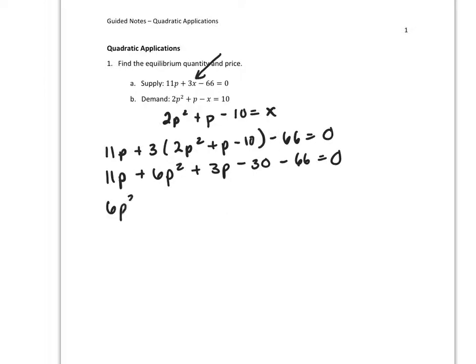6P squared. Let me see, 11P plus 3P is 14P. And negative 30 minus 66 would be negative 96. So now what I have is an equation only in terms of P, and this equation is quadratic because the degree is 2.